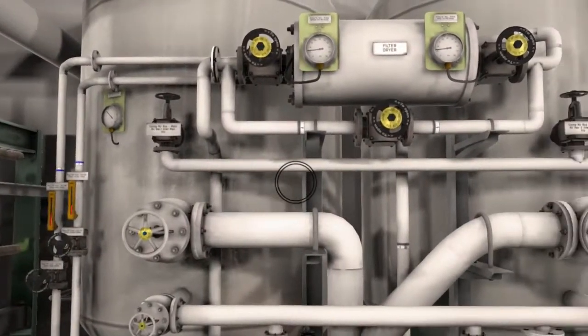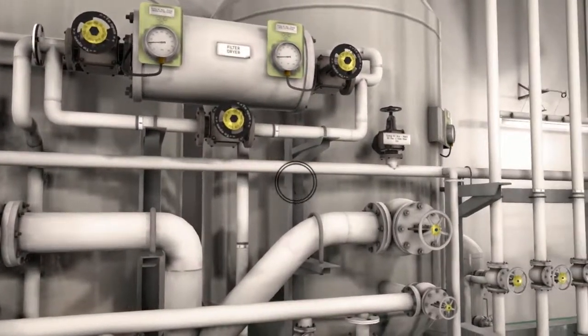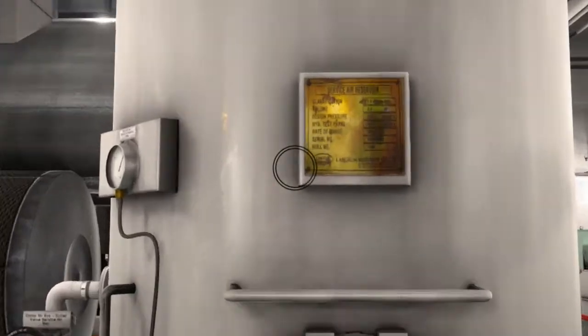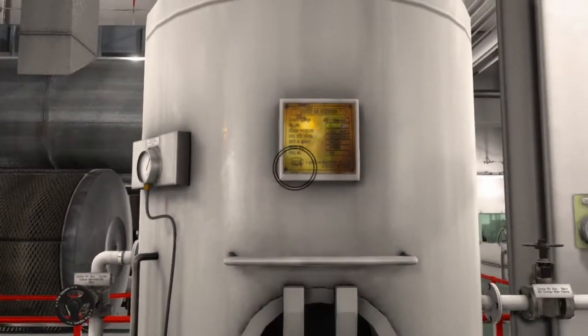The main air receivers have a capacity of 8.0 cubic meters each at 30 bars, while the auxiliary receiver has a capacity of 0.25 cubic meters at 30 bars.